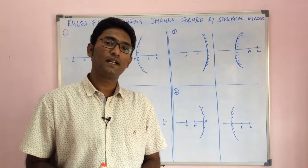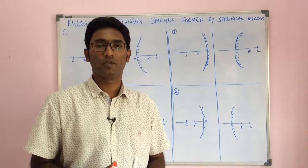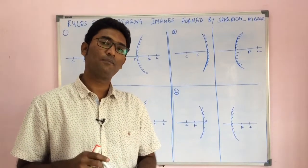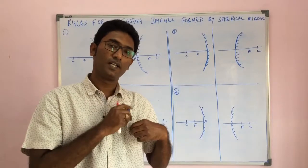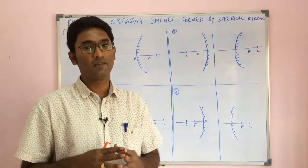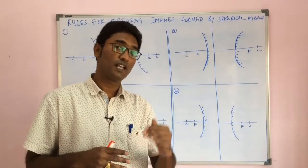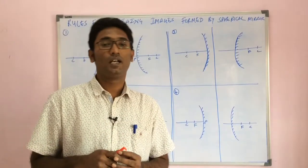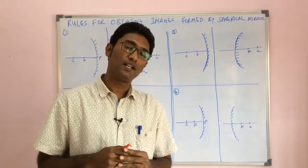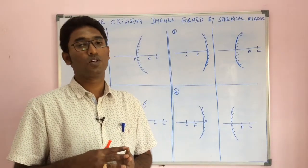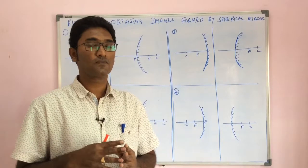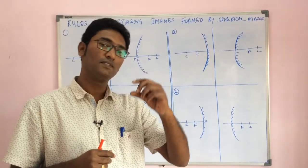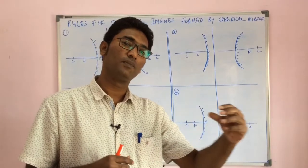We will see the rules used for constructing ray diagrams on paper. We already know that images formed in spherical mirrors have different properties. A concave mirror can form a real as well as virtual image, an image bigger or smaller than the object, or exactly equal in size. A convex mirror always forms a virtual image, smaller than the object, and the image size keeps reducing as the object moves away from the convex mirror.